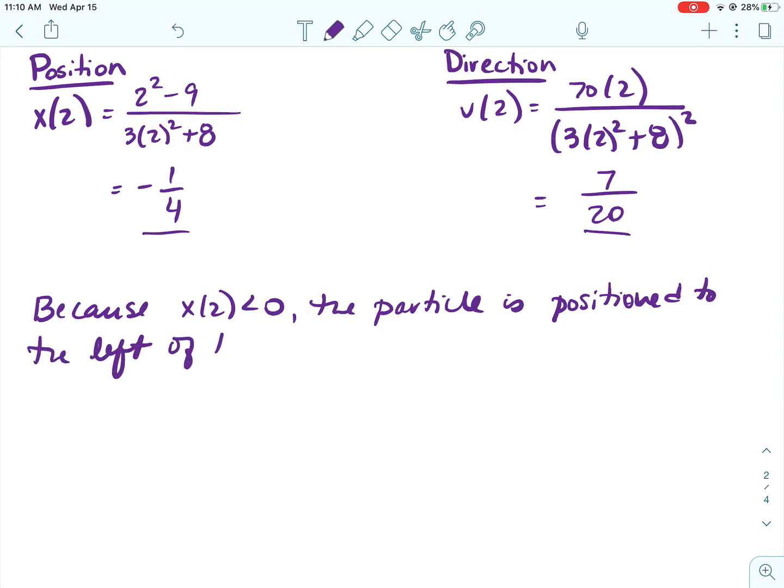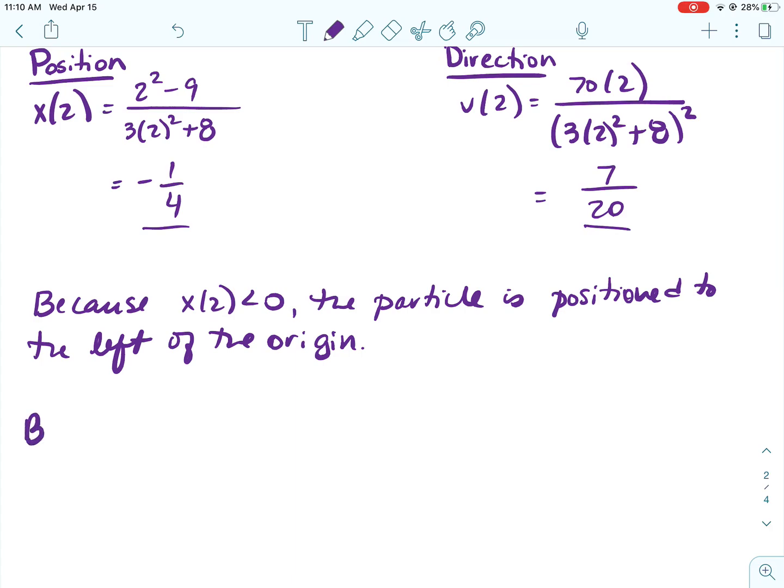So because x of 2 is less than 0, or you could say because x of 2 is negative, the particle is positioned to the left of the origin.